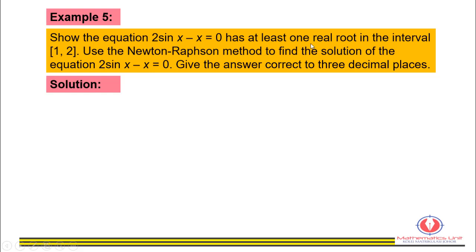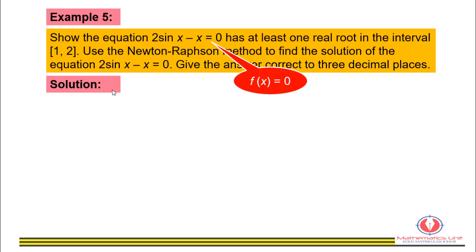Show that the equation 2sin(x) minus x = 0 has at least one real root in the closed interval [1, 2]. Then use the Newton-Raphson method to find the solution of 2sin(x) minus x = 0, giving the answer correct to three decimal places.